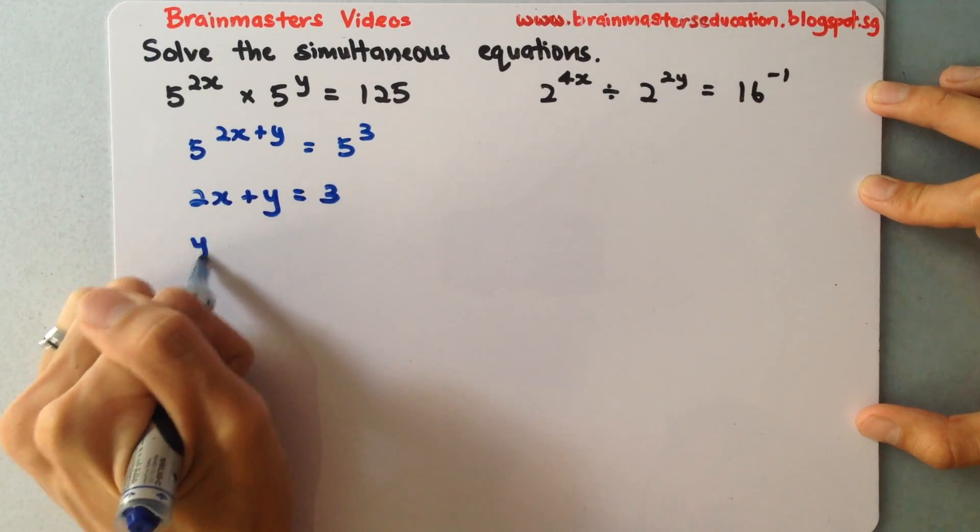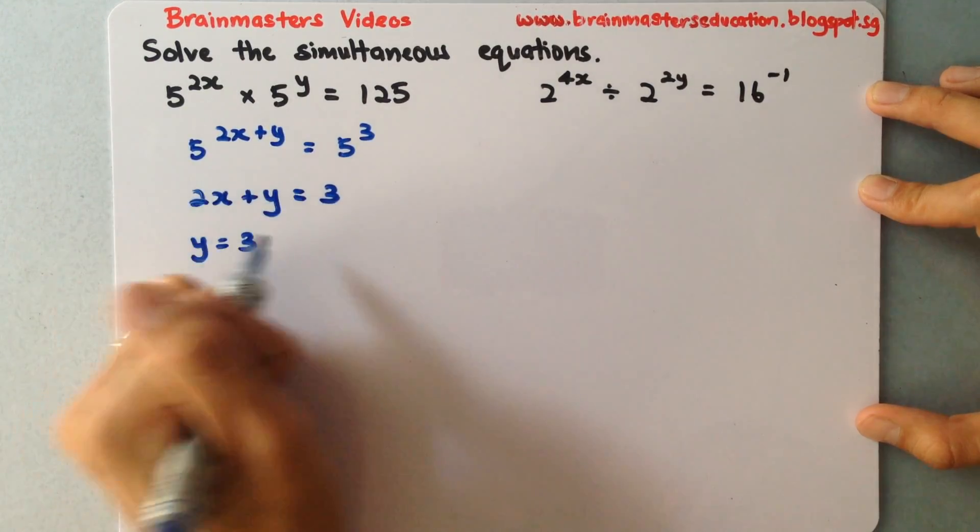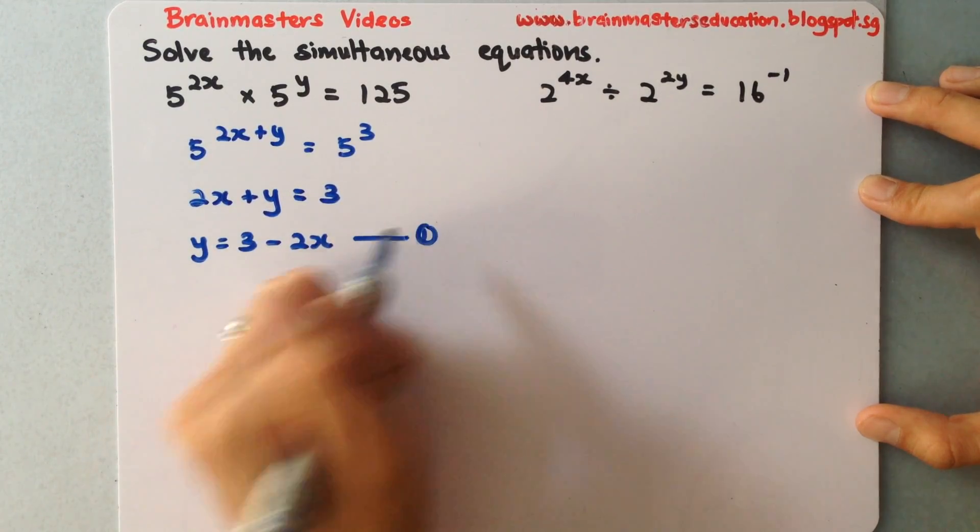So I'll make y the subject first. So y equals 3, I'll bring this over, become negative 2x. So label this as equation 1.